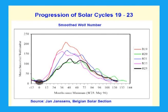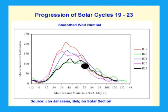Solar cycle 23 started in May 1996, rising to a peak of 120.9 in April 2000. For solar cycle 23 to be of average length, solar cycle 24 should have started in January 2007.